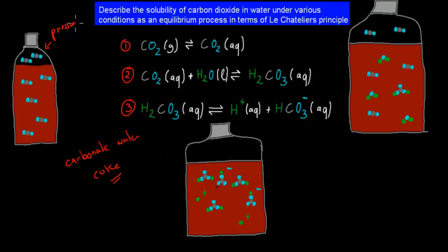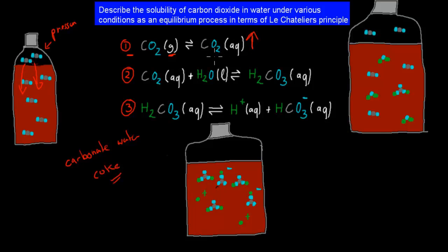Because of that high pressure, the gaseous carbon dioxide molecules are actually forced into the Coke solution and become aqueous. So the first step, which happens under high pressure, is we have carbon dioxide in gas form going into carbon dioxide in the aqueous dissolved form. An increase in the dissolved form happens because of that high pressure.